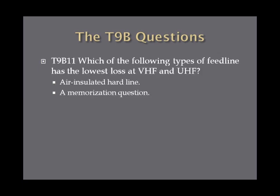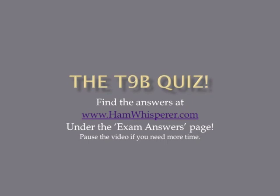Which of the following types of feed line has lowest loss at VHF and UHF? The answer is air insulated hard line — something you've got to memorize. Air insulated hard line has the lowest loss at VHF and UHF. And that's it for the T9B review; now it's time for the quiz.